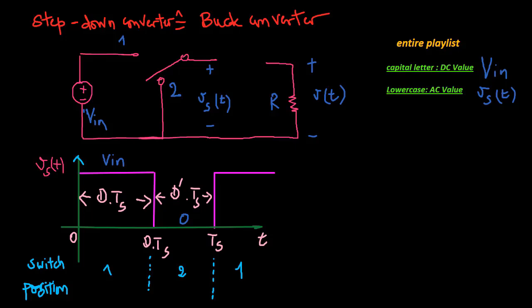The switch produces a rectangular waveform VS. The voltage VS is equal to the DC input voltage VN when the switch is in position 1 and is equal to 0 when the switch is in position 2.